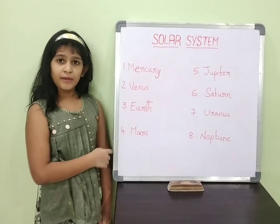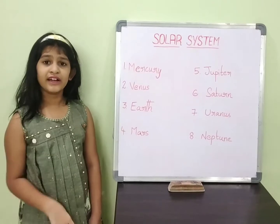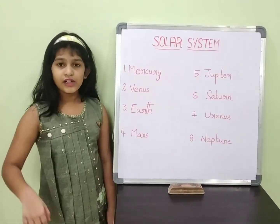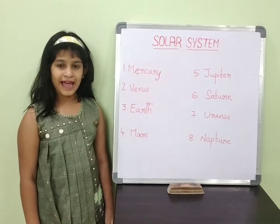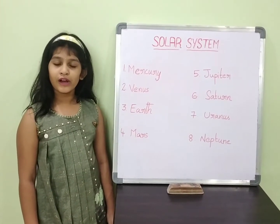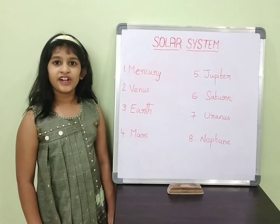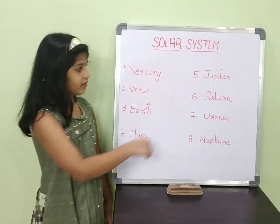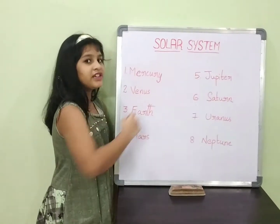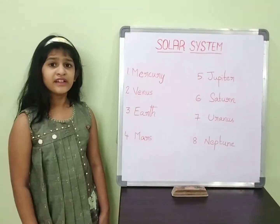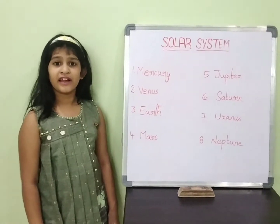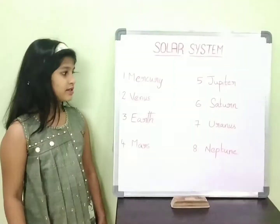Mars is the second smallest planet and is called the red planet. Jupiter is the largest planet in our solar system.